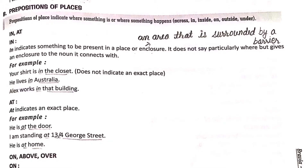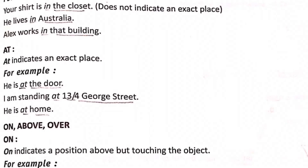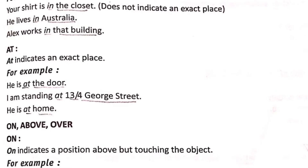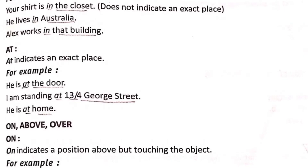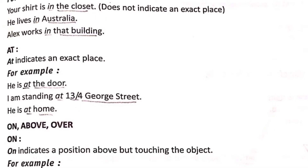Now, where do we use 'at'? At indicates an exact place. Just like in preposition of time, where 'at' was used for an exact time, similarly here, when an exact place is known, we use 'at'. For example: 'He is at the door.' 'I am standing at 13/4 George Street.' 'He is at home.' In all these examples, the exact place is mentioned, so we use 'at'.